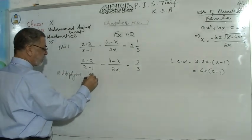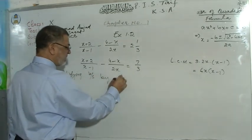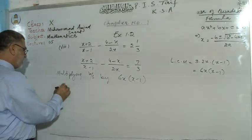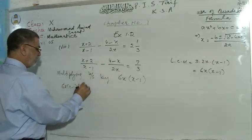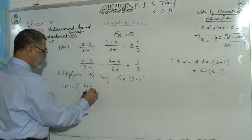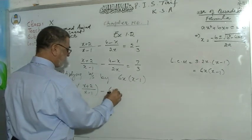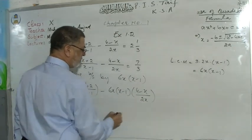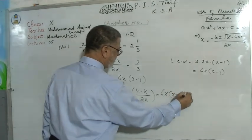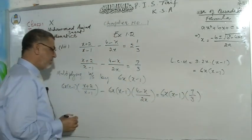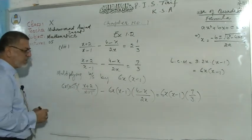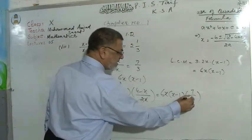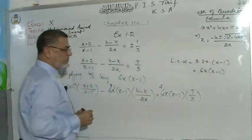Multiplying both sides by the LCM, 6x(x−1), each and every term will be multiplied. So 6x(x−1) × (x+2)/(x−1) — the (x−1) cancels with (x−1), and this x cancels with 2x, so 2 cancels into 6 leaving 3, and similarly 3 cancels into 6 leaving 2.